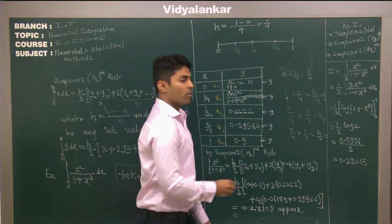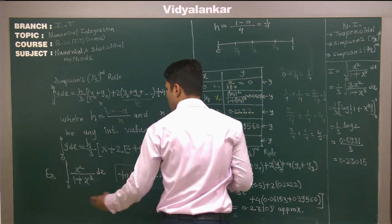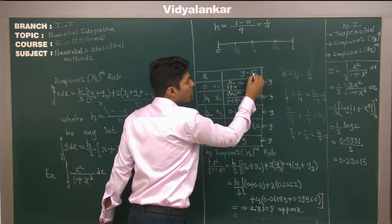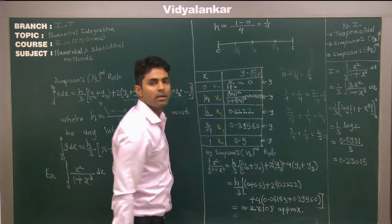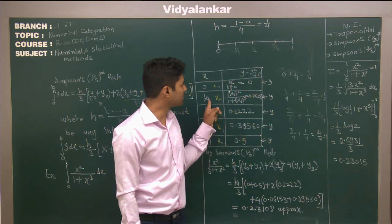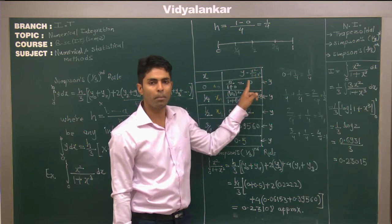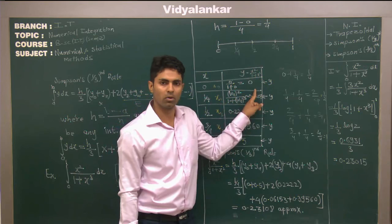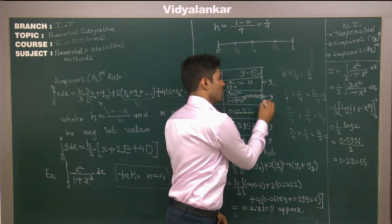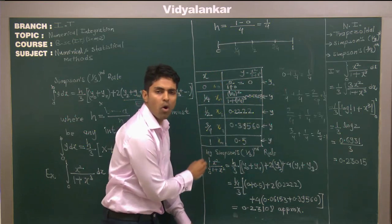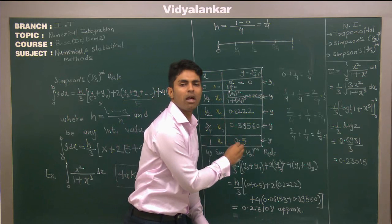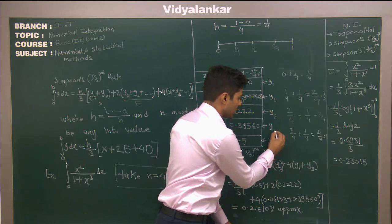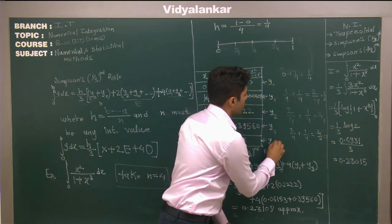Now our y is nothing but this function. This is nothing but x square upon 1 plus x cube. Now when you put the value of x here, that is 0, 0 squared upon 1 plus 0 cubed equal to 0. This is your y0 and when each value of x gives you corresponding value of y, that is y0, y1, y2, y3 and y4.